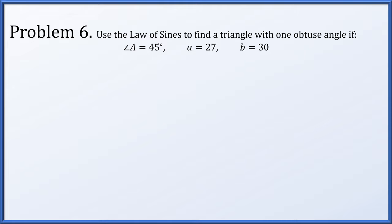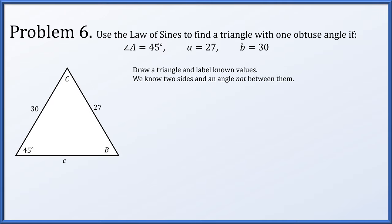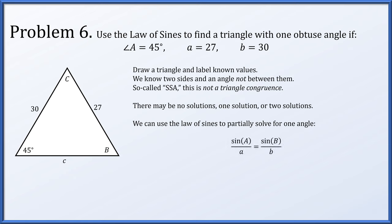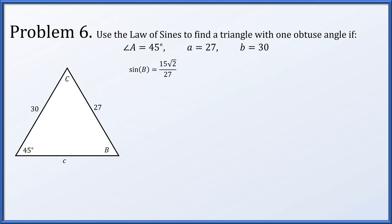Problem six: let's use the law of sines to find a triangle with one obtuse angle, given that angle A is 45 degrees, side length a is 27, and side b is 30. Draw a triangle and label what we know. We have two sides and an angle not in between them — still not a triangle congruence; there might be no solutions, one, or two. But remember, we're specifically looking for a solution with one obtuse angle. Using the law of sines, sine A over a equals sine B over b, giving us that sine B equals 15 root 2 over 27.